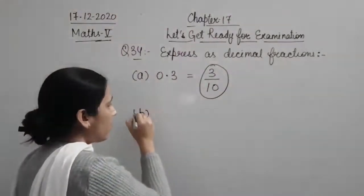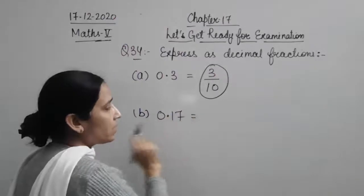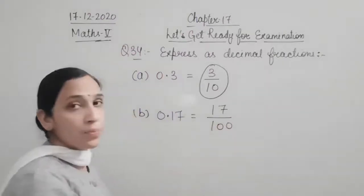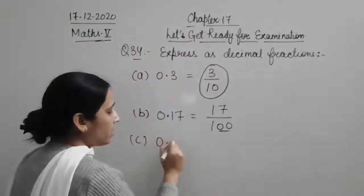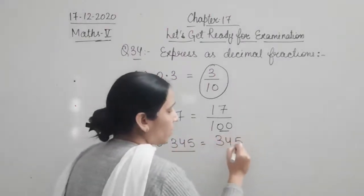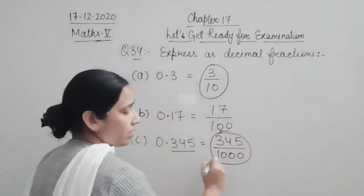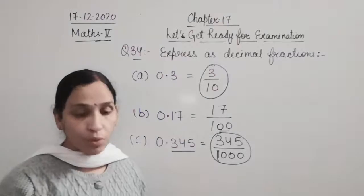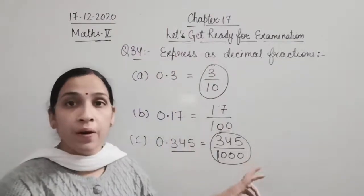Second example: 0.17. How many decimal places? Write 17, divide by 100 — because 100 contains 2 zeros. One more example: 0.345. Three decimal places — write 345, divided by 1000. As many decimal places as there are, that many zeros you add in the denominator. That is your representation of a decimal as a decimal fraction.